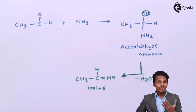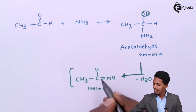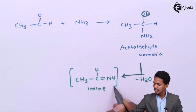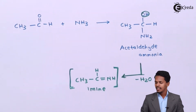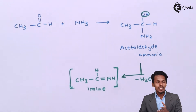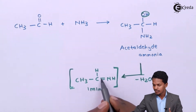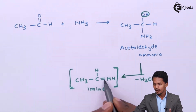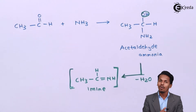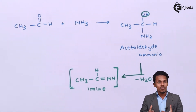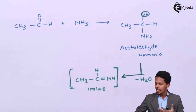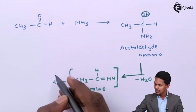The OH group along with the H of the NH2 group is removed in the form of water (−H2O), and the remaining molecule is CH3-CH=NH, which is known as an imine. But this is a very unstable structure, represented with square brackets. Since there is a double bond present, it can form a trimer through trimerism.